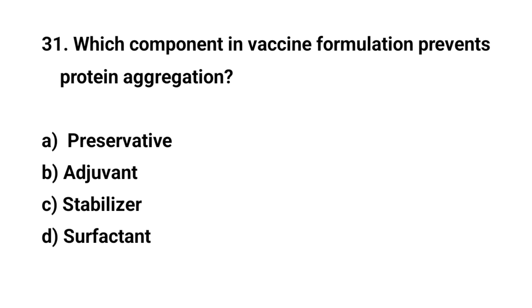Question number 31. Which component in vaccine formulation prevents protein aggregation? The right answer is C: Stabilizer.